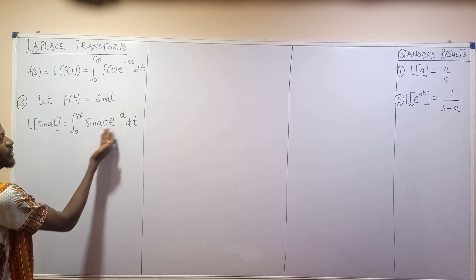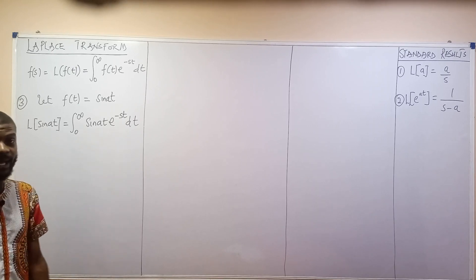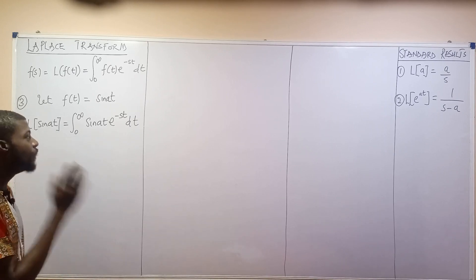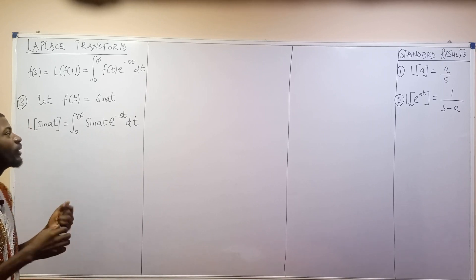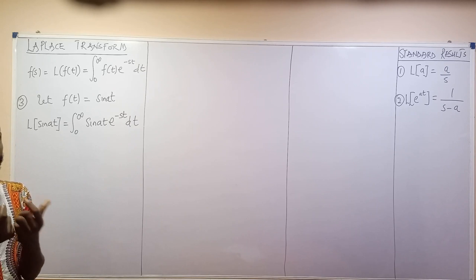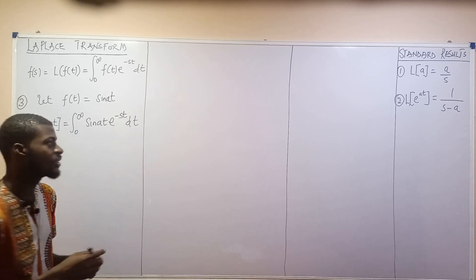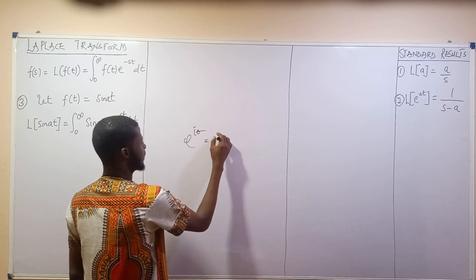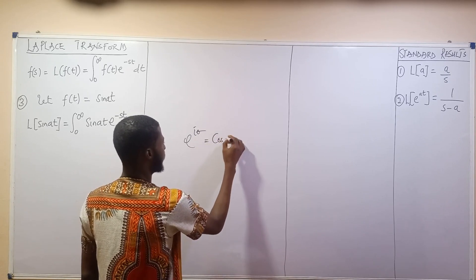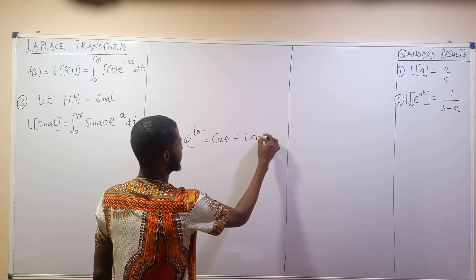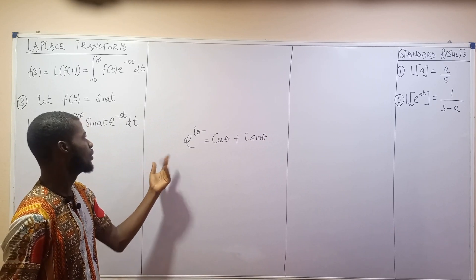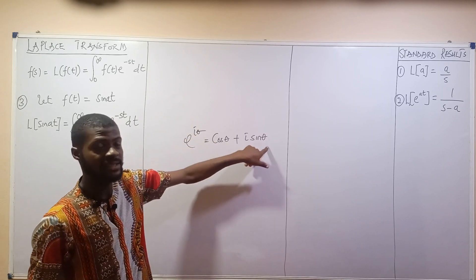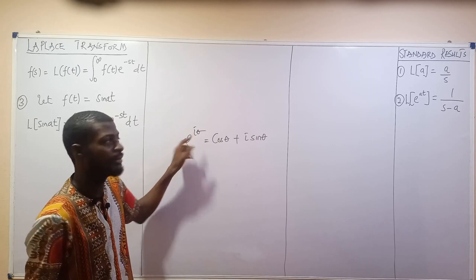We can evaluate this using integration by parts, but that is a long process. It is much easier if we make use of a substitution we know from complex numbers. Remember that exponential i theta is equal to cos theta plus i sine theta.